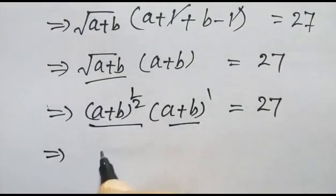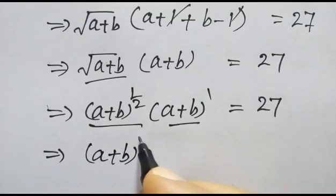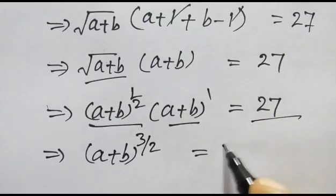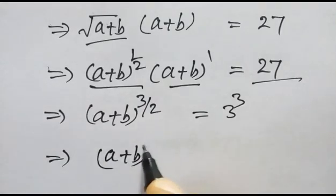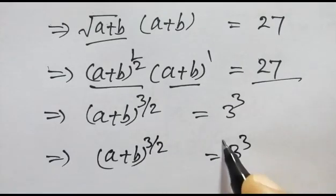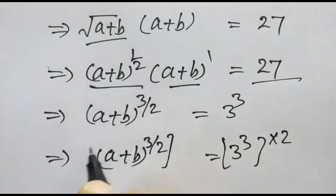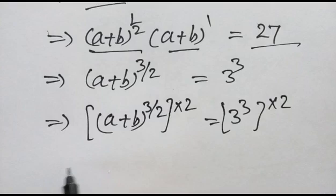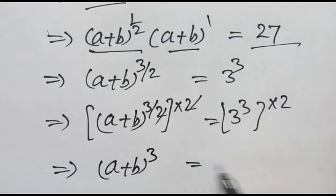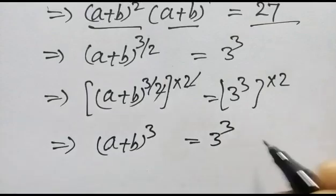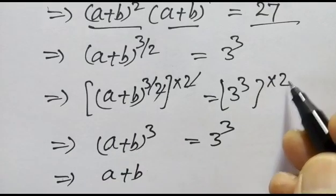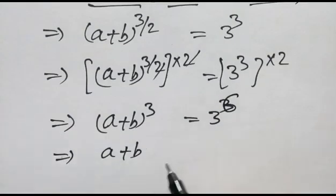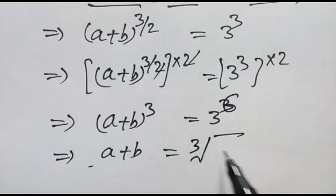Now A plus B to the power 3 by 2 is equal to 27, which equals 3 cubed. Now multiplying the power by 2 on both sides, so A plus B cubed equals 3 cubed. Wait — so A plus B to the power 3 by 2 equals 3 cubed, meaning A plus B equals 9.